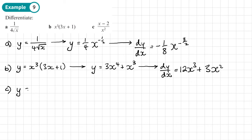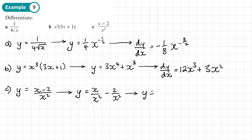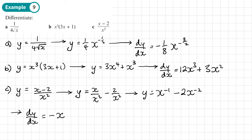Part c: y equals x minus 2 over x squared. Again, we need to write it in a form we can differentiate. Both terms share the same denominator, so I can write x over x squared minus 2 over x squared. That simplifies: x over x squared is 1 over x, written as x to the power minus 1; and 2 over x squared is written as 2x to the power negative 2. Now differentiating: multiply by negative 1 to get minus x to the power negative 2. For the second term, negative 2 times negative 2 gives plus 4x to the power minus 3.